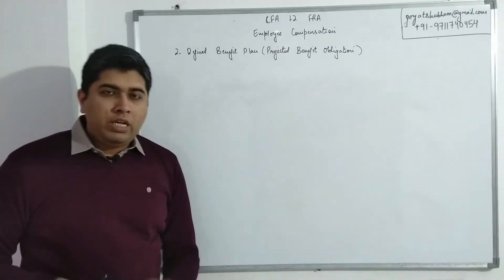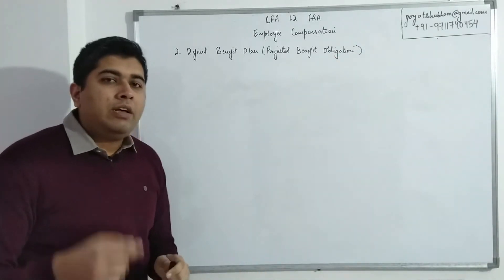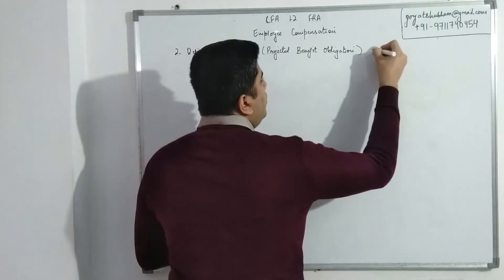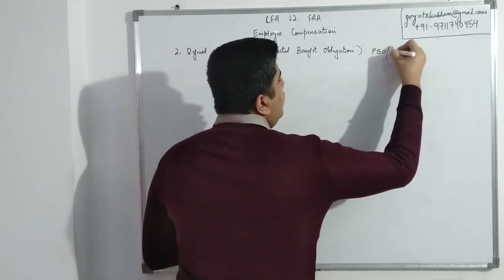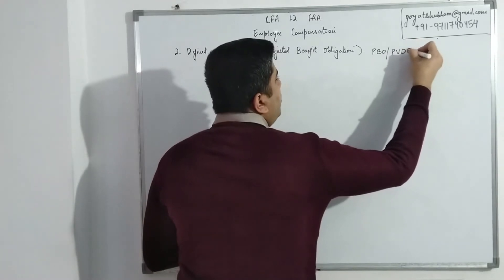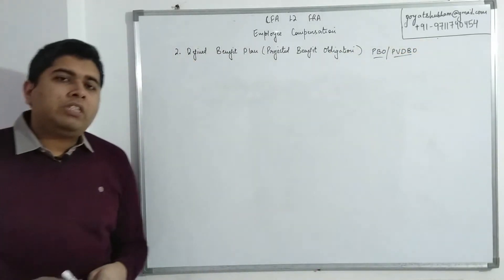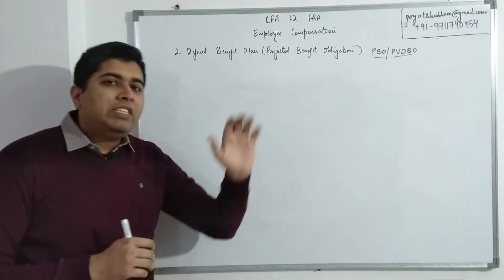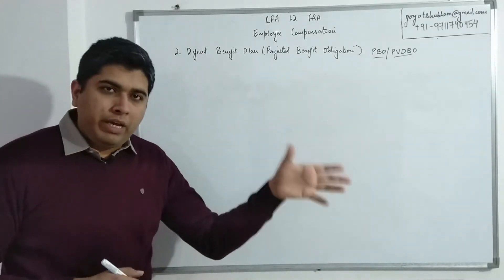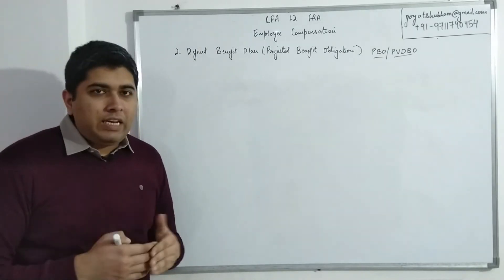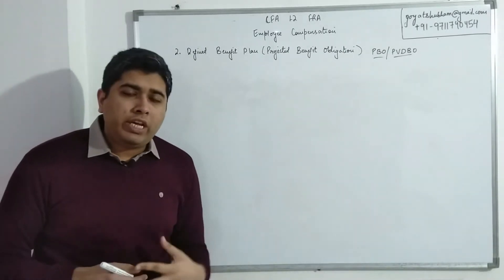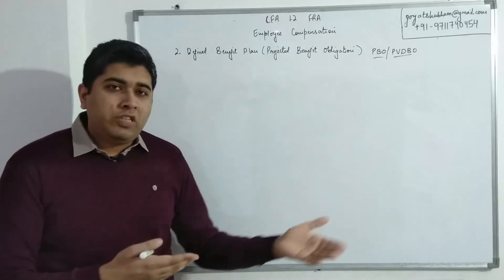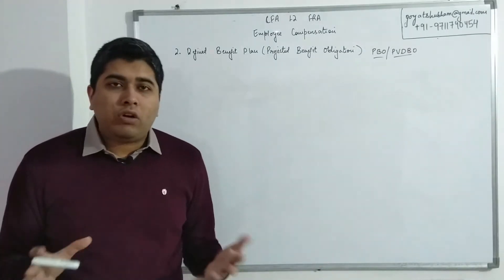So one part is figuring out the liability, what money, what obligation will I as an employer have. And the second part, which we'll cover later on, that is about figuring out how much investment should I make right now so that my obligations can be met at the requisite time. So our first point of discussion is about calculating what the obligation is. It is known as Projected Benefit Obligation, and in IFRS the same thing is known as Present Value of Defined Benefit Obligation. So we have a short form of this as PBO, and in IFRS we call it Present Value of Defined Benefit Obligation.